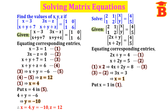Put x equal to 1 in the first equation: 2 into 1 plus y equal to 4, so 2 plus y equal to 4. Taking 2 to the right side: y equal to 4 minus 2, that is 2. Therefore y equal to 2. Write the answer: x is equal to 1 and y equal to 2.